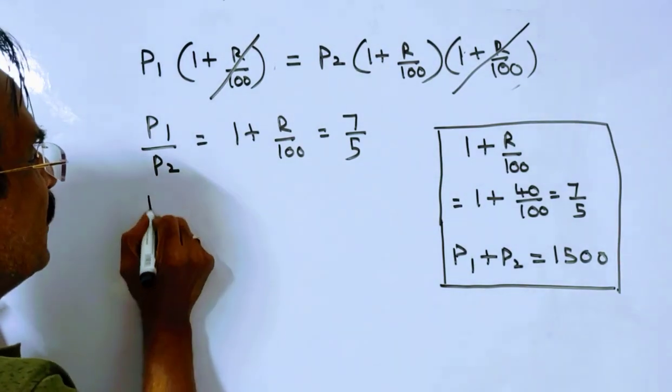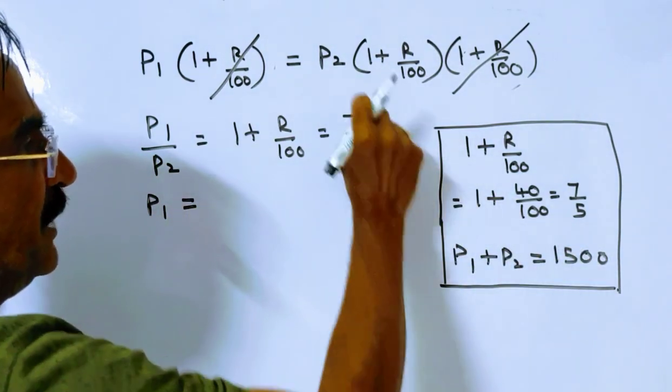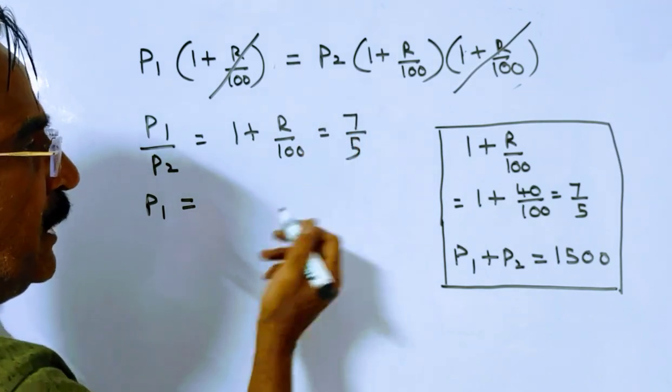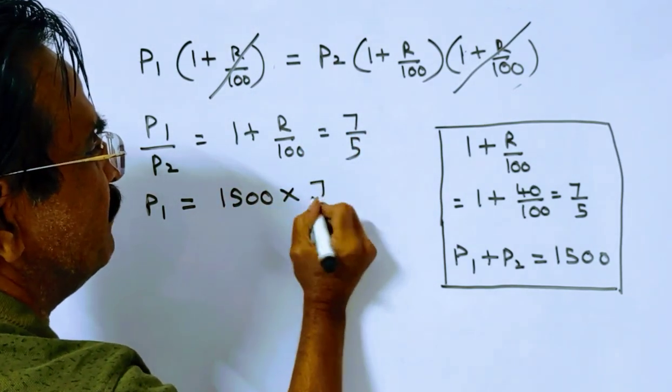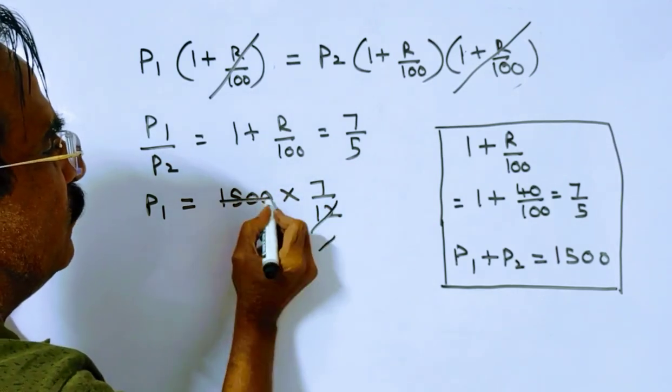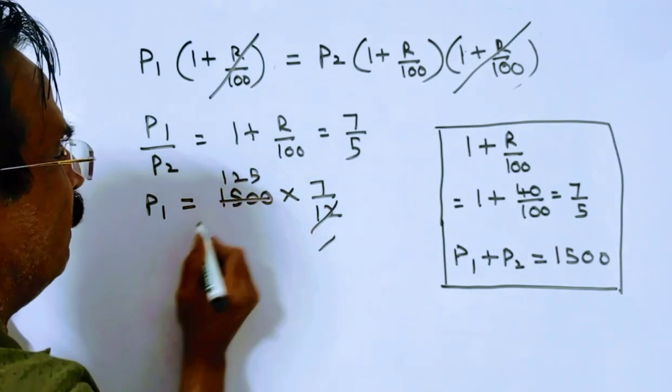So now let us find P1. Let us divide 1500 in the ratio 7 is to 5 to get P1 and P2. So 1500 into 7 by 12, we get P1. 12 12's, 1 4 4, 12 5's.